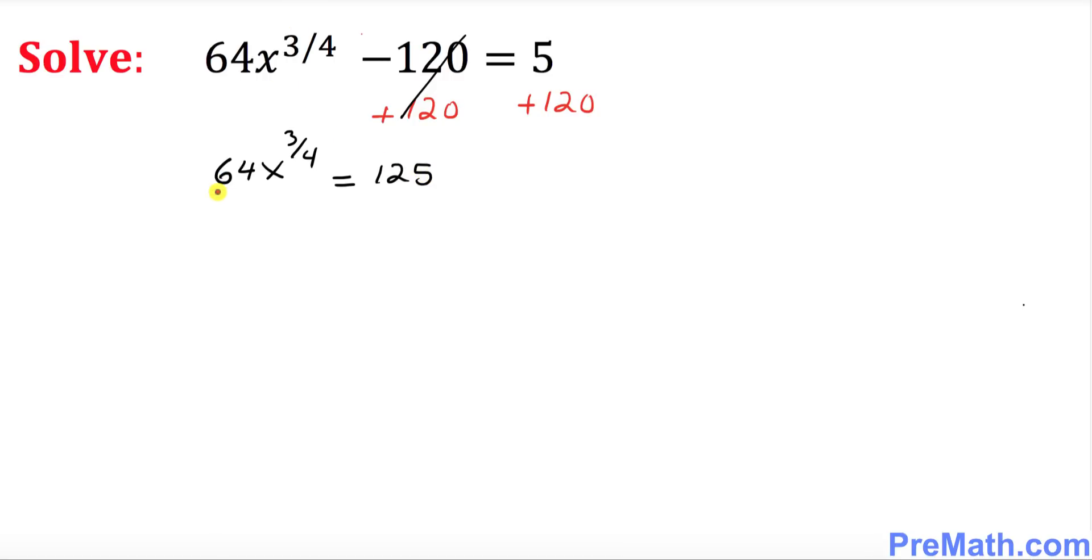Now I want you to divide both sides by 64. So this 64 and 64 are gone, so we ended up with x power 3 over 4 equals to 125 over 64.